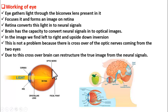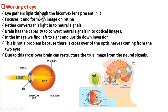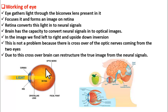Good morning students. In our previous class we studied about the structure of the eye in detail. With that knowledge, let us now understand the working of the eye. What is the function of an eye? It is to form images of whatever we see. Eye helps us to see things. But how? Let us see the mechanism.